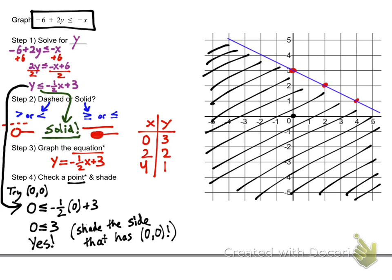One last comment is you could plug (0, 0) into that original equation, negative 6 plus 2y is less than or equal to negative x, to check your work. In fact, I did that and found I had made a mistake, so I would recommend you doing that as well.